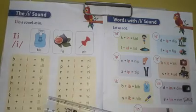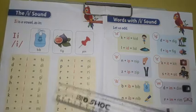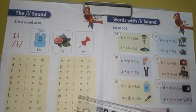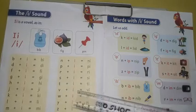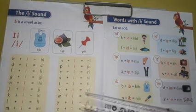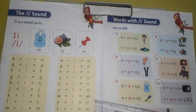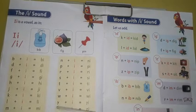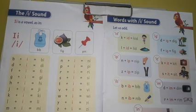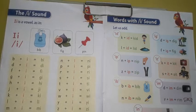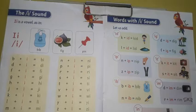T plus I: T says T, I says E, T plus E — T. V plus I: V says V, I says E, V plus E — V. W plus I: W says W, I says E, W plus E — Wi. Y plus I: Y says Y, I says E, Y plus E — Yi. Z plus I: Z says Z, I says E, Z plus E — Ze.